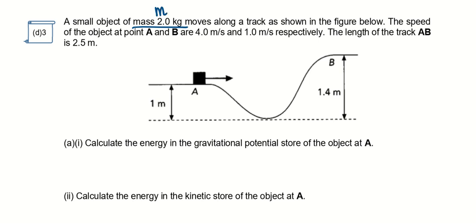It moves along a track as shown in the figure below. The speed of the object at point A is 4 meters per second, and at B it is 1 meter per second.